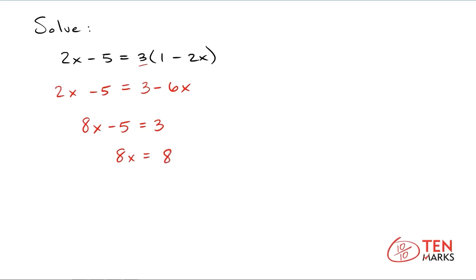The last step would be to isolate the x variable by dividing both sides of the equation by 8. So when you do that you get x equals 1. So now you know that there is a single solution — there is one solution to this equation.